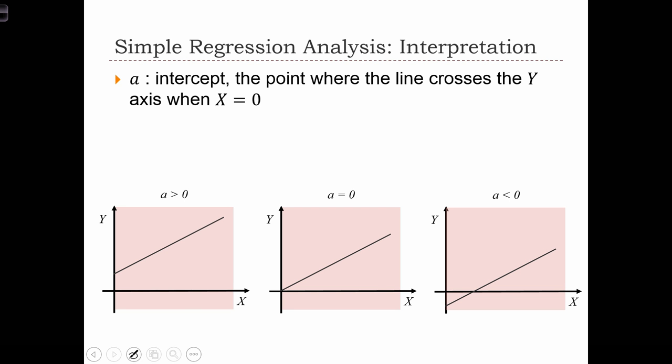If a equals 0 in this middle case, then the regression line is going to pass through the origin of the Cartesian graph. This is the location where x equals 0 and y equals 0.